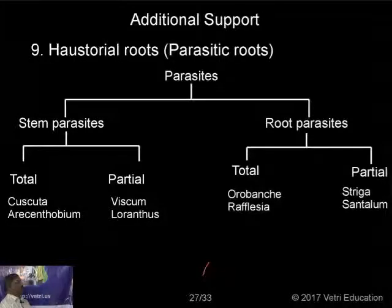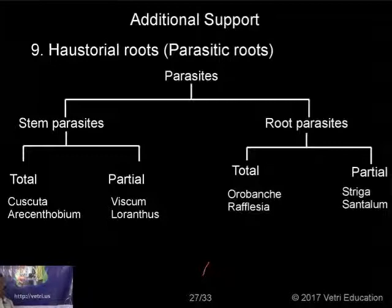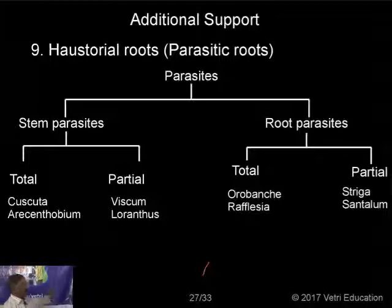Haustorial roots: these are roots produced by parasitic plants that are haustorial in nature, and absorb food materials, water, or both from the supporting plant. These are parasitic plants. Parasites are of two types: stem parasites and root parasites. A root parasite gets nutrients from the root of the host, and a stem parasite is found on the stem or branches of the host. There are also total and partial types of each.